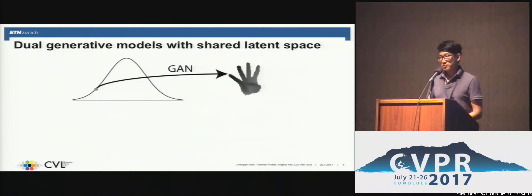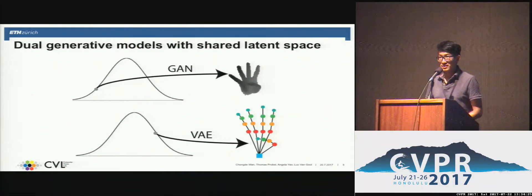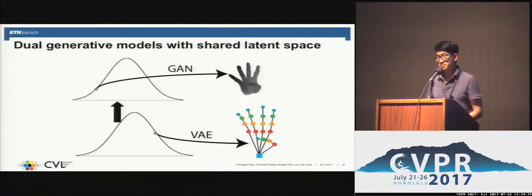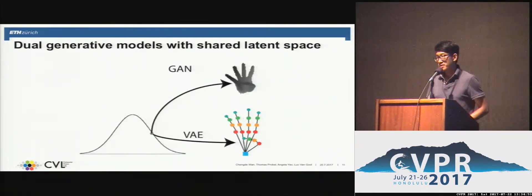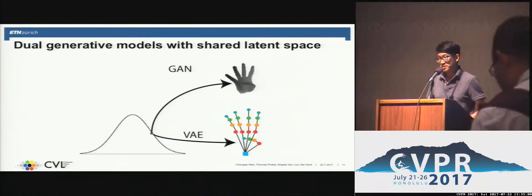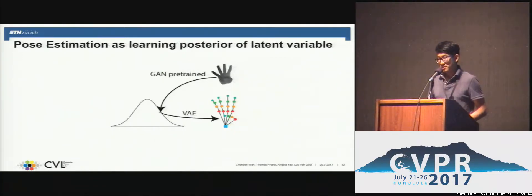To learn the generative models, we first use a generative adversarial network, the GAN, to map samples from a low-dimensional Gaussian distribution to the synthesis depth map. Similarly, we use a VAE, the variational autoencoder, to map samples from another Gaussian distribution to the corresponding hand pose parameters. Given the low dimensionalities of these two Gaussian distributions, we can learn the mapping between them given only a limited number of samples.